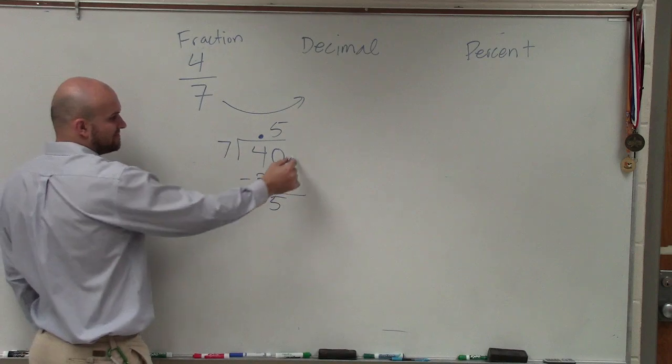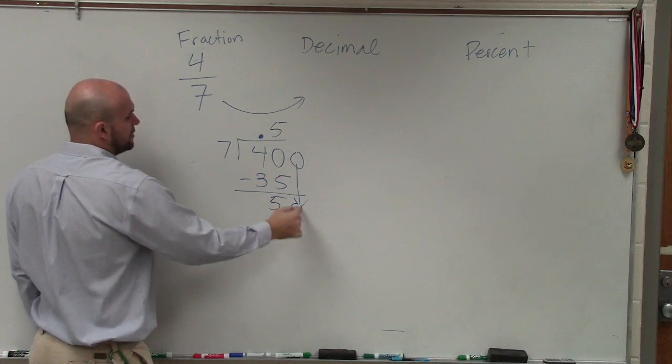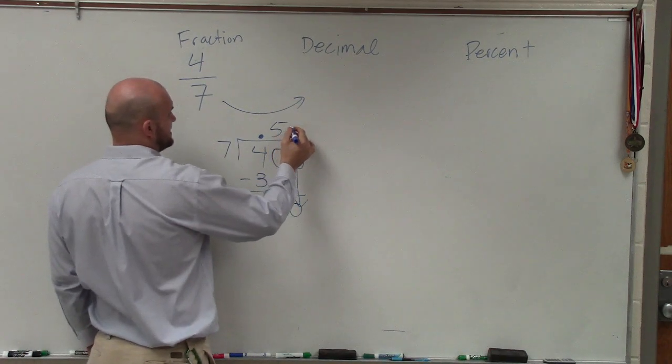7 does not go into 5, so I bring down another 0, which is 50. 7 does go into 50 seven times.